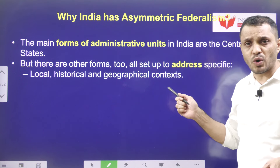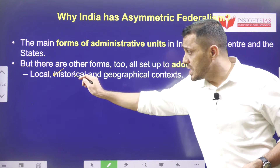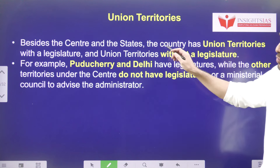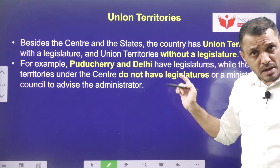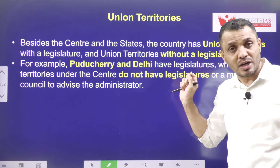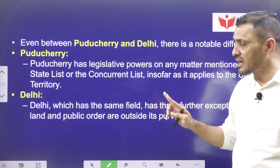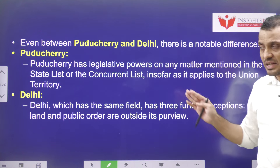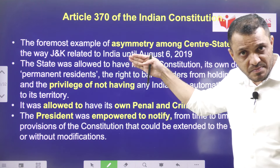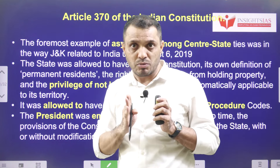Why India follows asymmetric federalism is because of differences in local, historical, and geographical contexts. Among UTs, there are differences between Puducherry and Delhi even though both have their own assemblies. Among states, Jammu & Kashmir used to stand out because it was given complete asymmetric federalism in the form of Article 370.